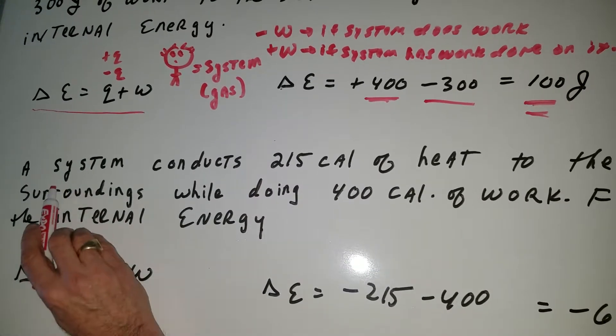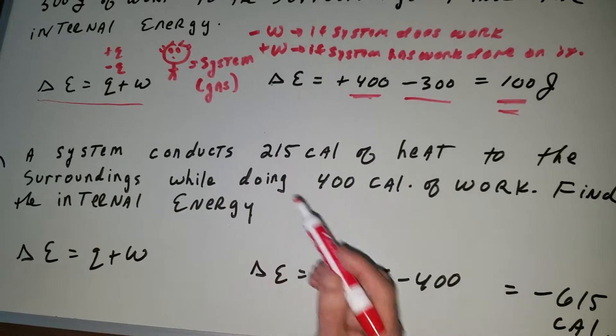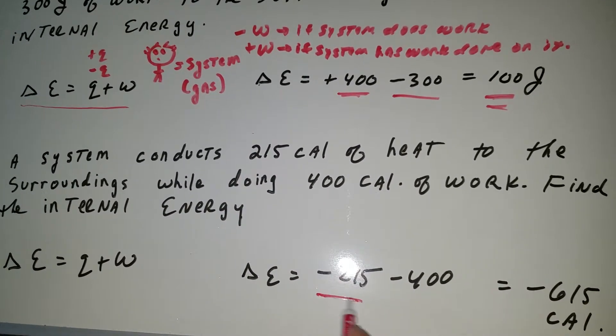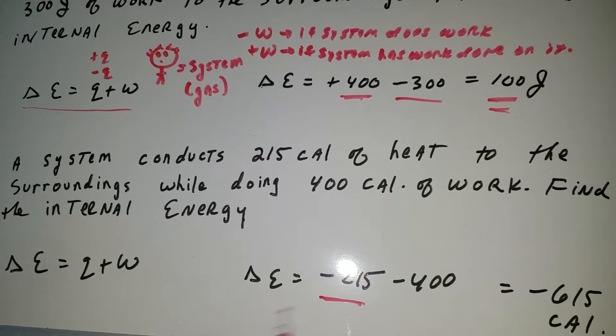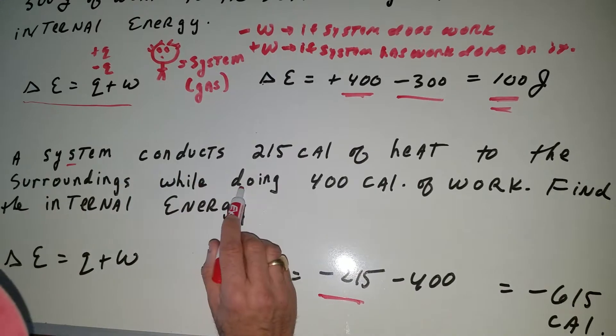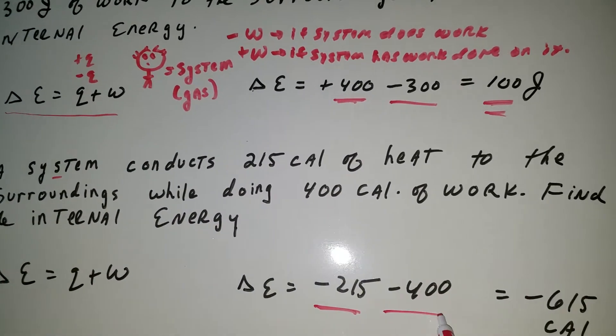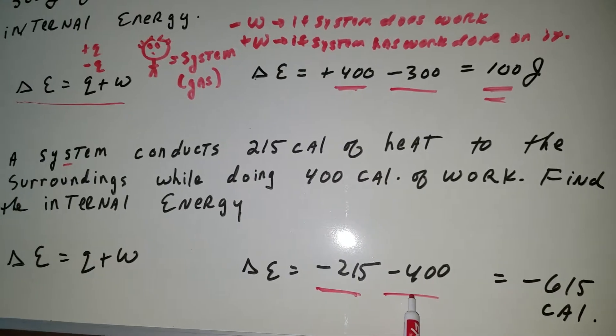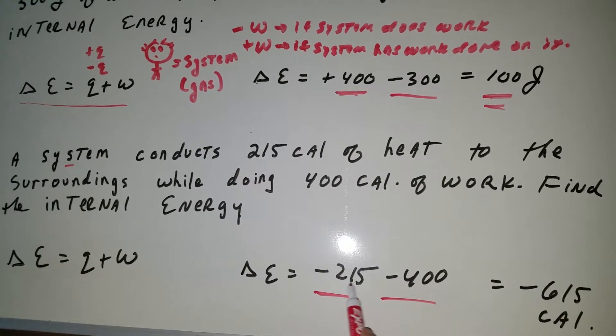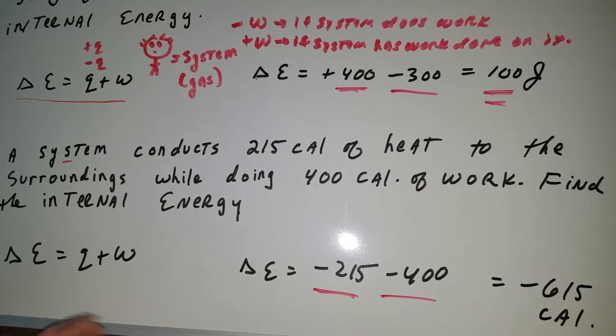Now the first thing we do is the system is conducting the heat, meaning it's given off heat, so that means that the heat must be negative. And now the system, what is the system? It says it's doing work. So if you're doing work once again, it's minus 400. So minus 215 minus 400 gives you minus 615 calories.